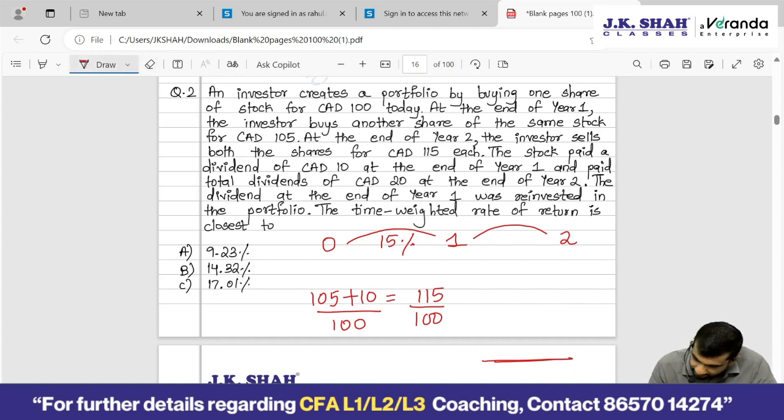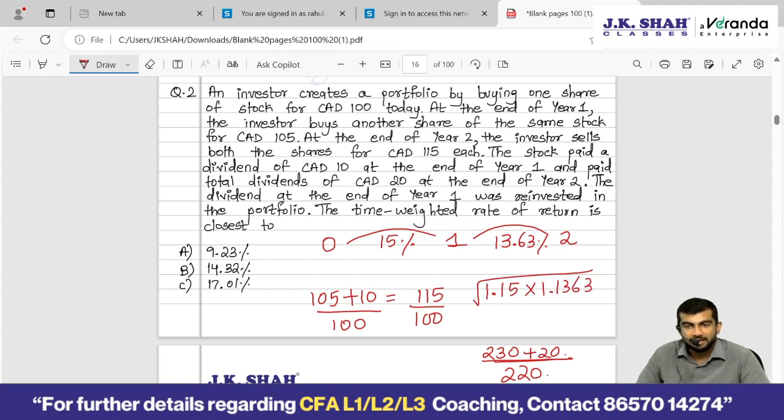Now let's check what is the value at the end of year 2. Each stock is sold for 115. So 115 times 2 is 230 is the value of your investment. And additionally, at the end of year 2, dividends received is 20. So your 220 investment becomes 250. How much percentage appreciation from 220 to 250? 13.63 percent. This is what I wanted, the two returns in percentage terms. Now it is not difficult to calculate the geometric average. Geometric average will be 1.15 times 1.1363 and square root of that. And don't forget to do minus 1 times 100. So answer comes to option B 14.32.